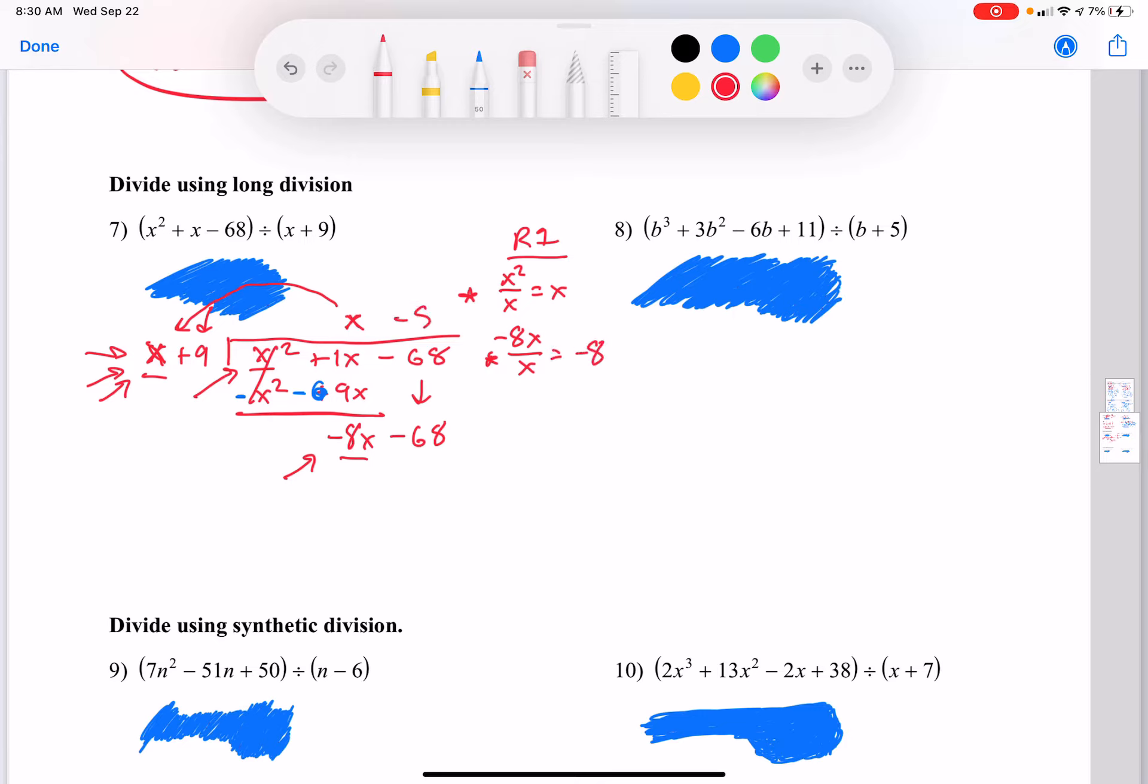So negative 8x divided by x is negative 8. So that's my answer, it goes on top. I'm going to do my rainbow multiplication. Negative 8 times x is negative 8x, negative 8 times 9 is negative 72, and I've got to change both of those signs.